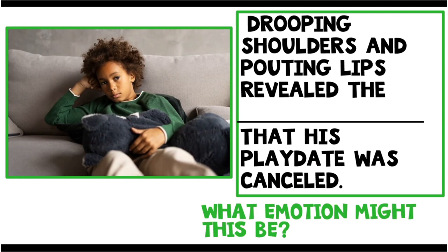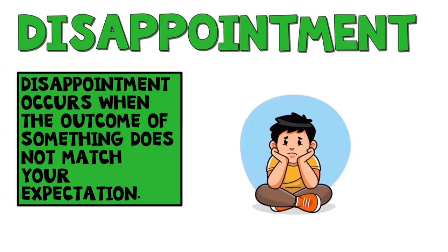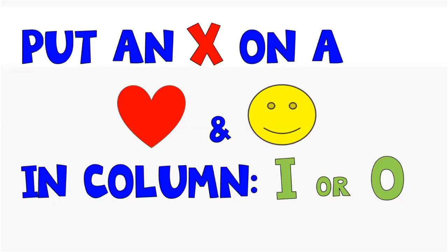Drooping shoulders and pouting lips revealed the disappointment that his playdate was cancelled. He's feeling disappointment. Disappointment occurs when the outcome of something does not match your expectation. Put an X on a heart and a happy face — both of them if you have them — in column I or O.